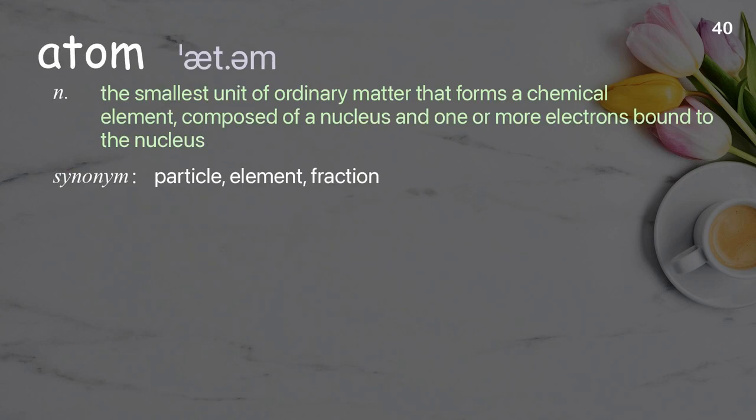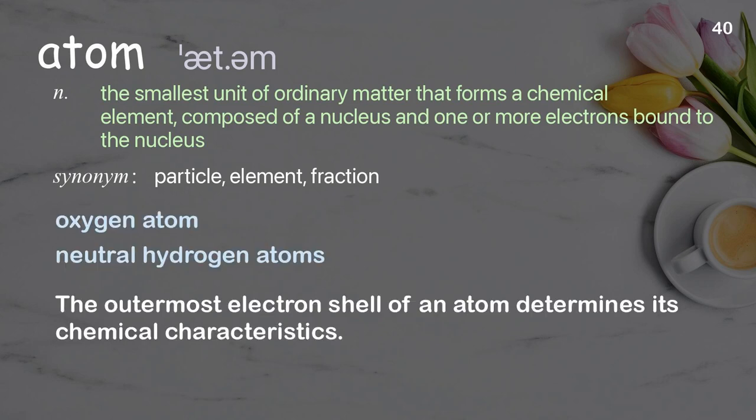Atom: the smallest unit of ordinary matter that forms a chemical element, composed of a nucleus and one or more electrons bound to the nucleus. Examples: oxygen atom, neutral hydrogen atoms. The outermost electron shell of an atom determines its chemical characteristics.